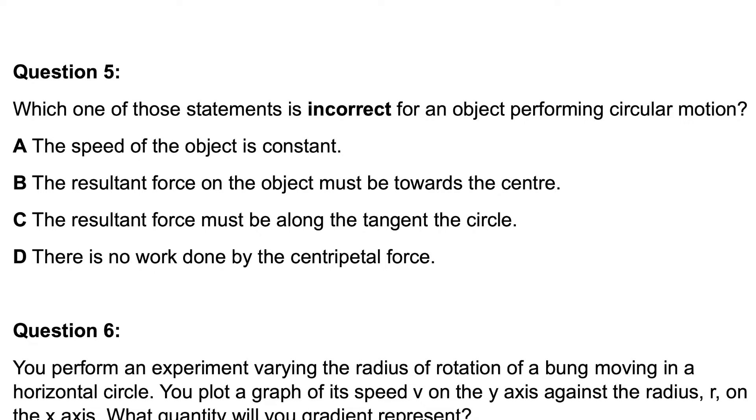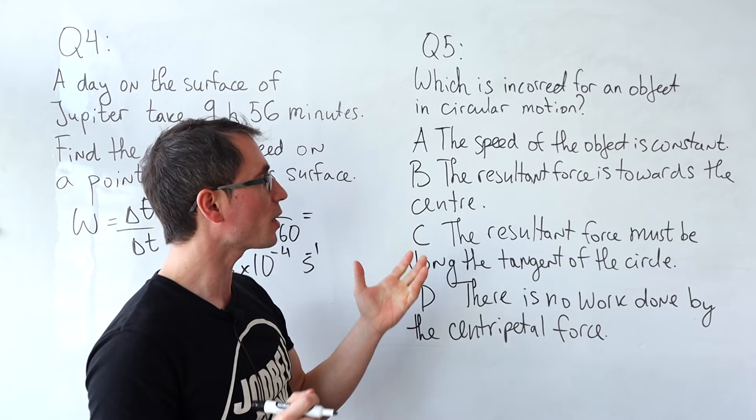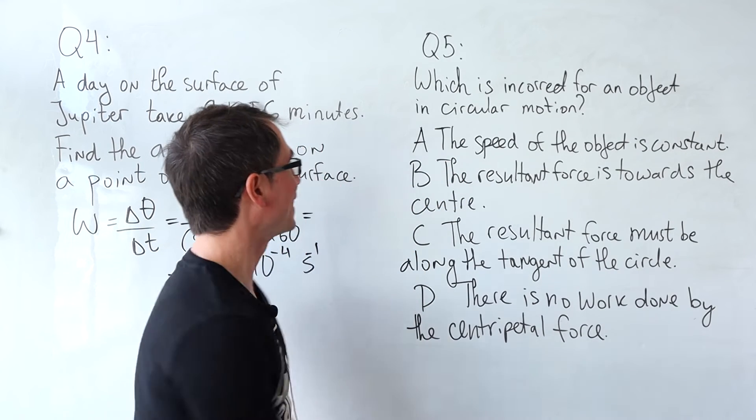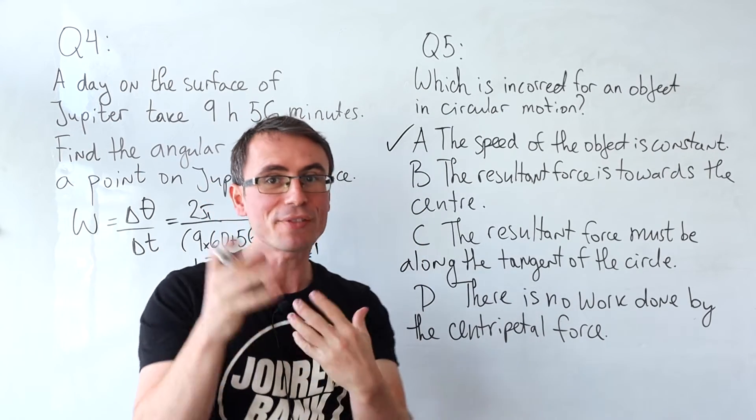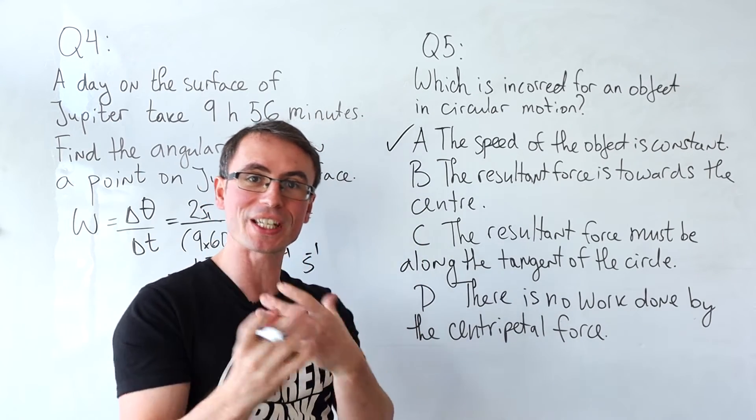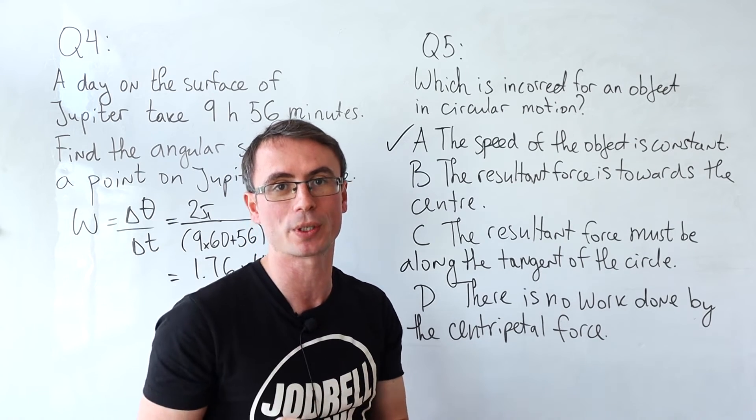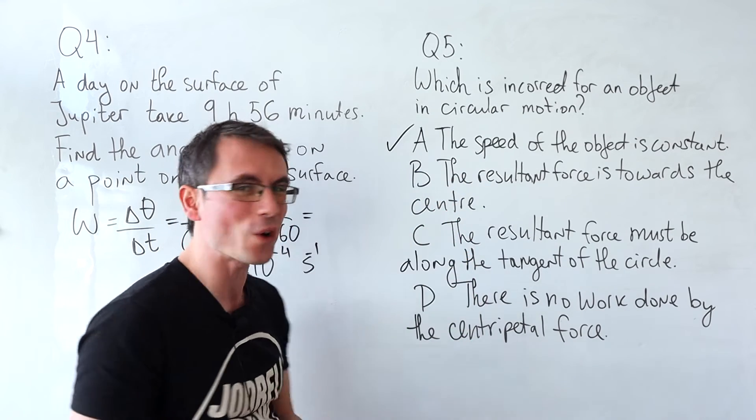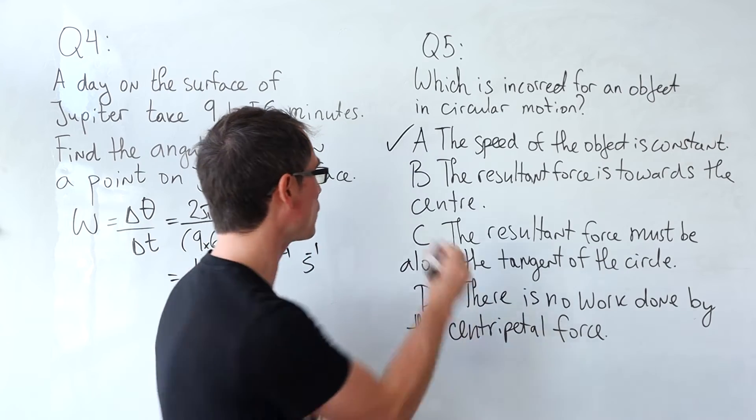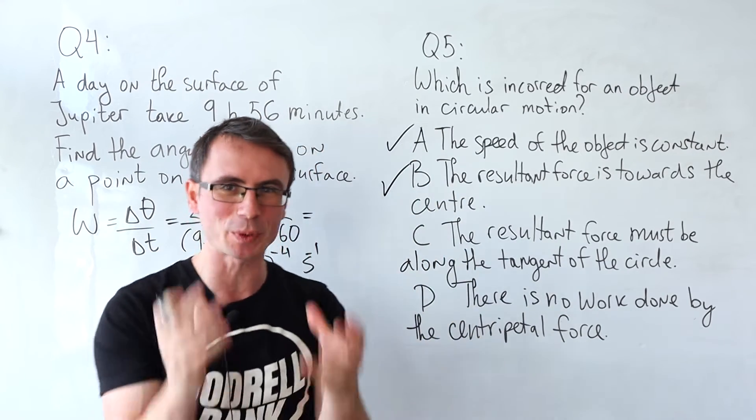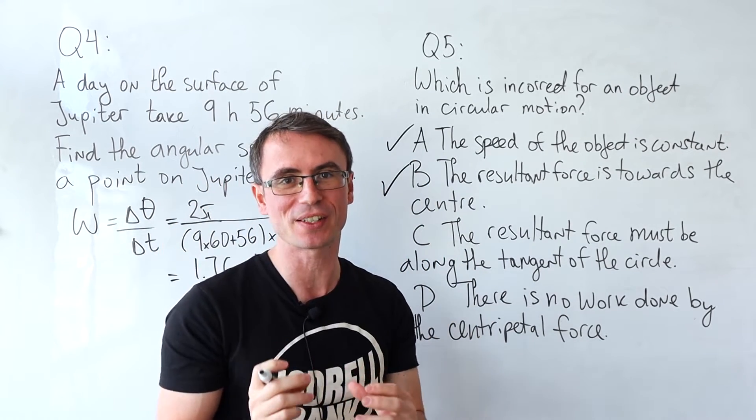Question five: which one of these statements is incorrect? A, the speed of the object is constant. This one is definitely correct. It's the velocity that's changing because velocity is a vector quantity and the direction is changing in circular motion. B, the resultant force is towards the center. Once again this is correct, one of the main aspects of circular motion.